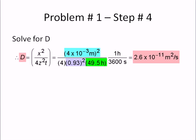Moving on from there, we're going to want to solve for D. Now we plug in what we know: our distance squared, 4 times our value of z that we just got squared, and our time. Our time was given in hours, we need to convert this to seconds. So 1 hour is 3,600 seconds, and we solve. Plug it in your calculator, and you get this number right here.